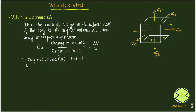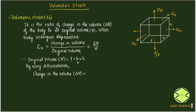By basic differentiation, using the product of three functions L, B, and H, we can write down the change in volume mathematically. You shall be getting L×B×δH plus B×H×δL plus L×H×δB. It is like the differentiation of a product of three functions.